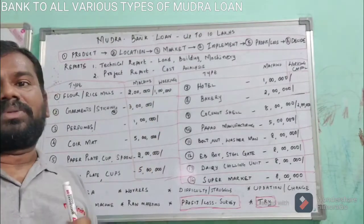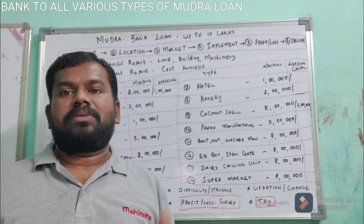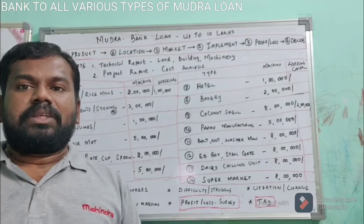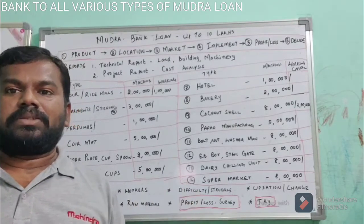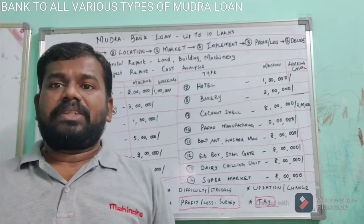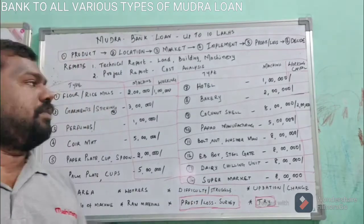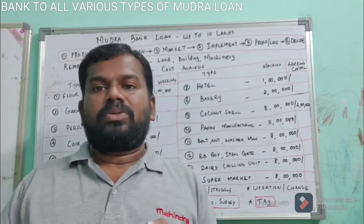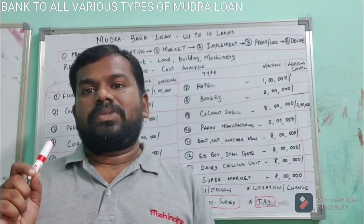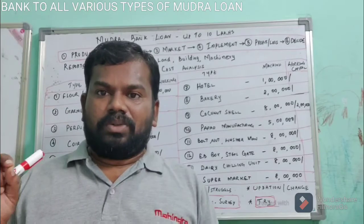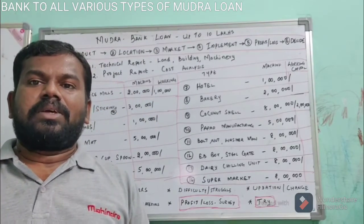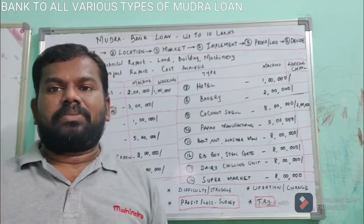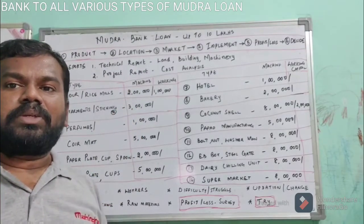There are two kinds of reports: a technical report and a project report. The technical report covers what you are going to do — your land, building, and machinery requirements. For example, in bakery there is one advanced machine that does everything — baking, slicing, and icing. The project cost includes machinery, workers, raw material, and the loan repayment amount. Always remember: if you get a loan, you must pay it back. Many people do not pay because they claim losses, but if they had chosen the right business with faith, they would have succeeded.